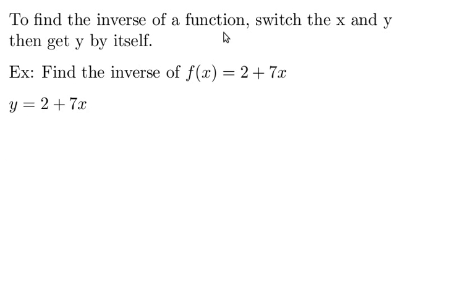The first thing we want to do is we want to switch the x and the y. So we have y here and x here. Let's just switch them around. So we get that x = 2 + 7y. All I do is I switch x and y.